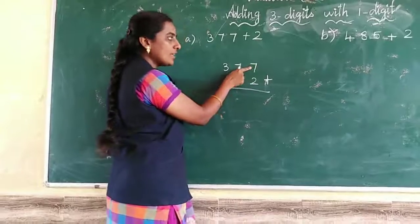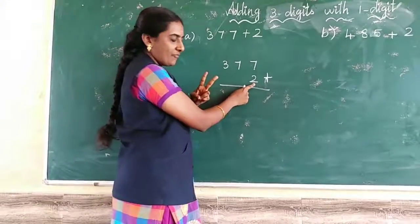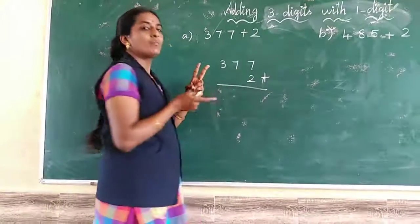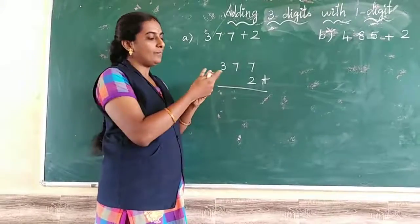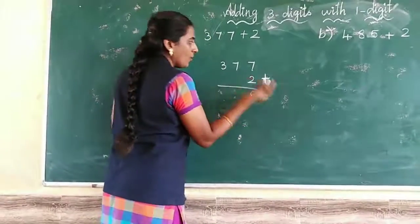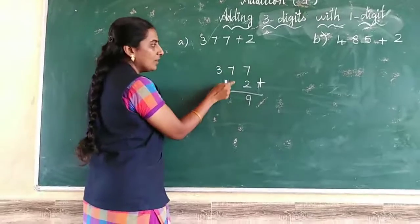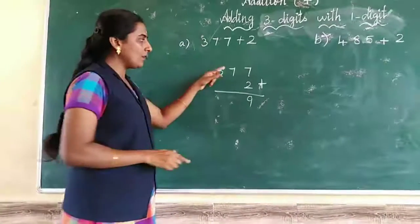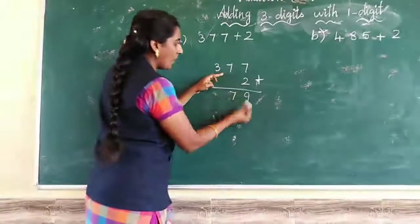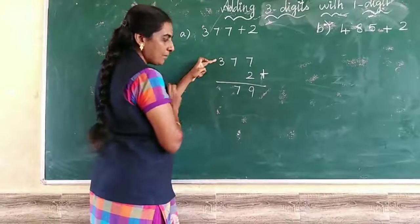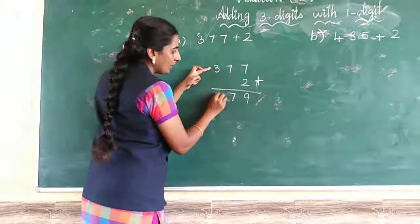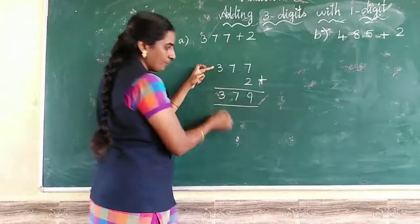Now we add. First take 7. Put 7 in your mind, 2 on your fingers. What comes after 7? 8, 9. Next is the tens place. Do you have any number below? No, so directly write it down. The hundreds place also has nothing below, so write it down.